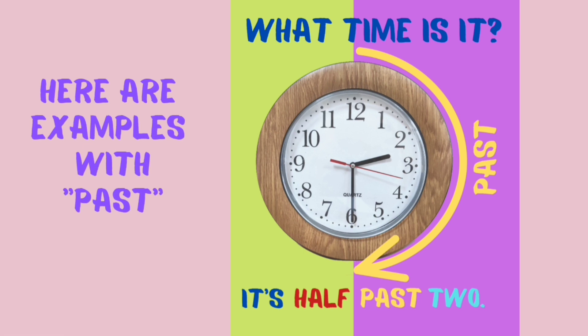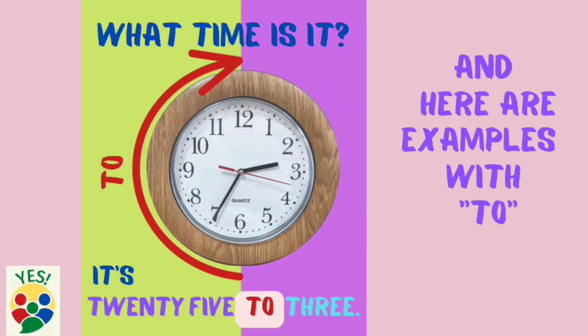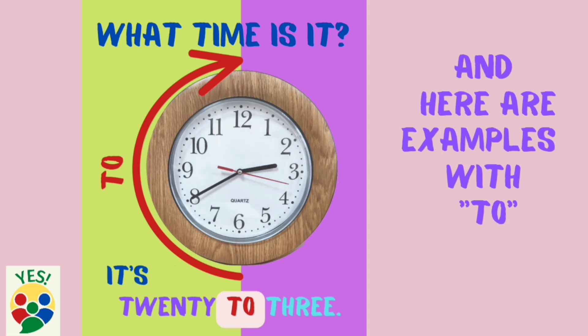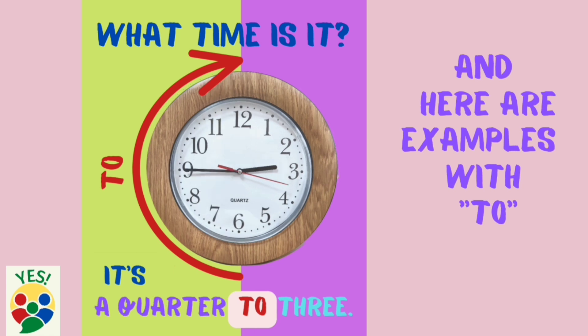And here are examples with 'to'. What time is it? It's 25 to 3. It's 20 to 3. It's a quarter to 3.